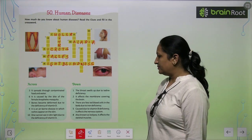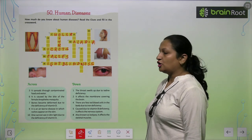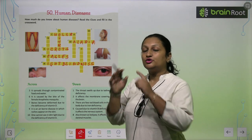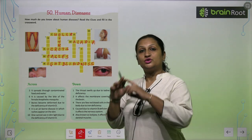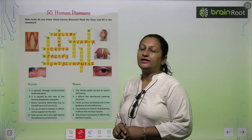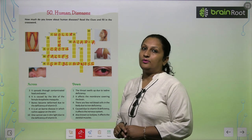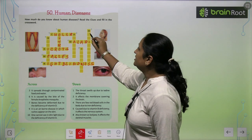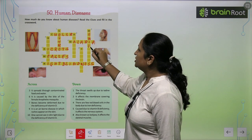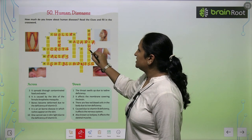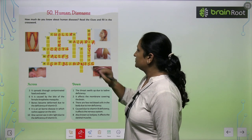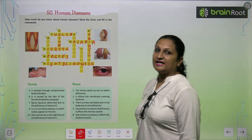It affects the membrane covering of the brain. If there is a problem in the brain, the outer coating — the covering called meninges — when there is a problem in that, it is called Meningitis.